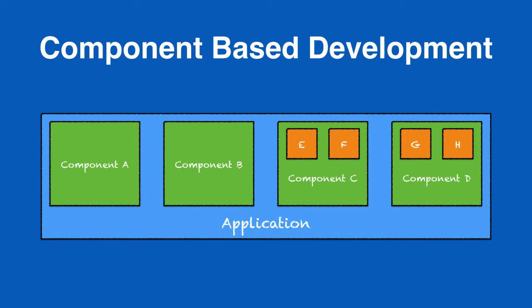So what we want to do with a component-based development framework is build an application in such a way that if we want to change one component out, or if we want to build a component up of many other components to use, we can do so really quickly and easily. It saves us having to rewrite a lot of code and makes it very quick and easy to reuse code and build our applications.